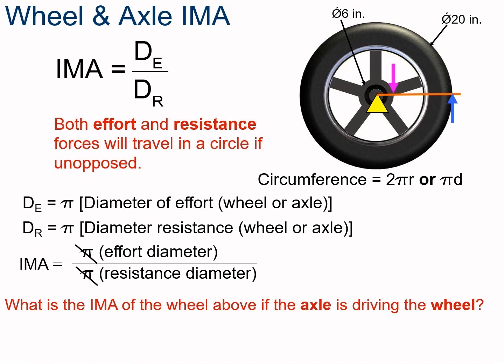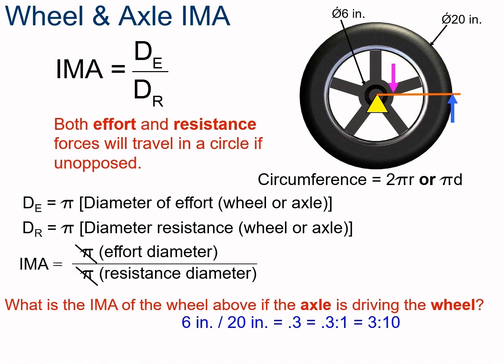So what is the IMA of the wheel if the axle is driving the wheel? Pause the video and calculate. If the axle is driving the wheel, that makes the axle the effort and the wheel the resistance. We divide 6 inches by 20 inches — 6 inches for the diameter of the axle divided by 20 inches for the diameter of the wheel. So 6 divided by 20 is 0.3, or a 3 to 10 ratio. That means for every 3 meters of circumference we turn the axle, we get 10 meters out of the wheel.